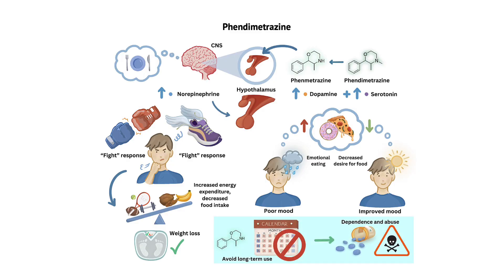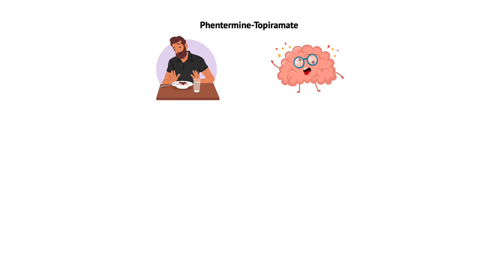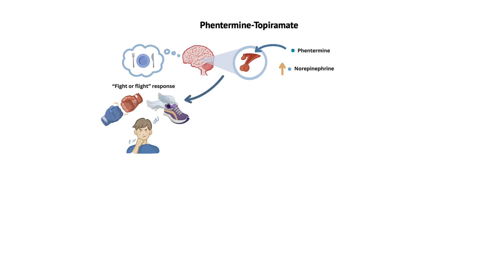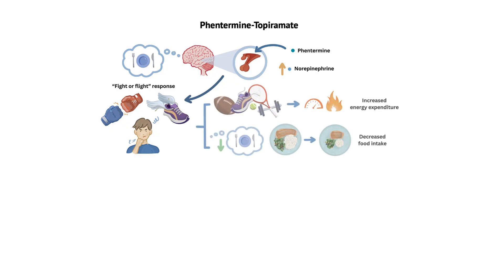Now let's move on to phentermine-topiramate, a combination drug that contains two active ingredients: phentermine and topiramate. Phentermine is a sympathomimetic amine, similar to phendimetrazine, belonging to the drug class of anorectics or appetite suppressants. Topiramate, on the other hand, is an anticonvulsant medication initially developed to treat epilepsy and migraine, but later found to have weight loss effects when used in combination with phentermine. The mechanism of action of phentermine is similar to that of phendimetrazine, as it stimulates the release of norepinephrine, a neurotransmitter involved in the regulation of appetite and energy balance. By increasing norepinephrine levels in the hypothalamus, phentermine stimulates the fight-or-flight response, leading to increased energy expenditure and decreased food intake, thus contributing to weight loss.